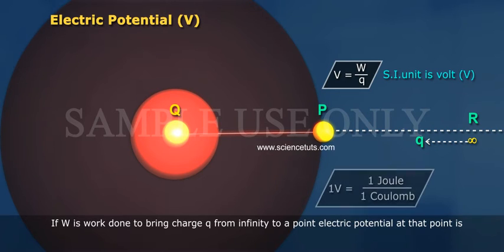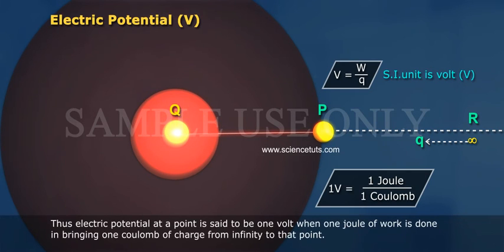1 Volt is equal to 1 Joule by 1 Coulomb. Thus electric potential at a point is said to be 1 Volt when 1 Joule of work is done in bringing 1 Coulomb of charge from infinity to that point.